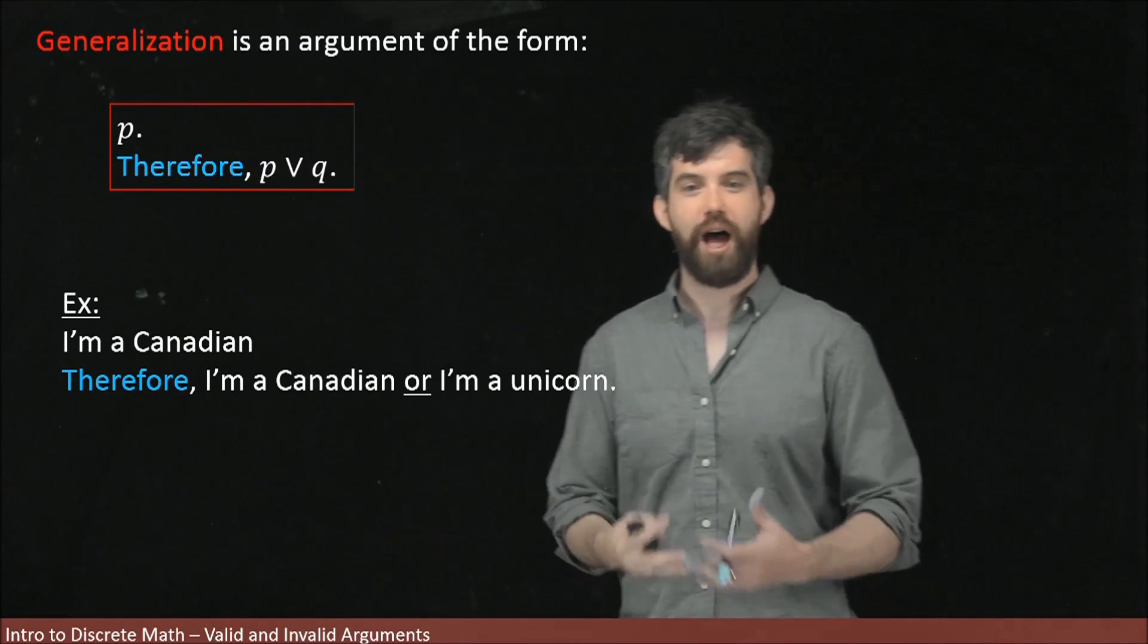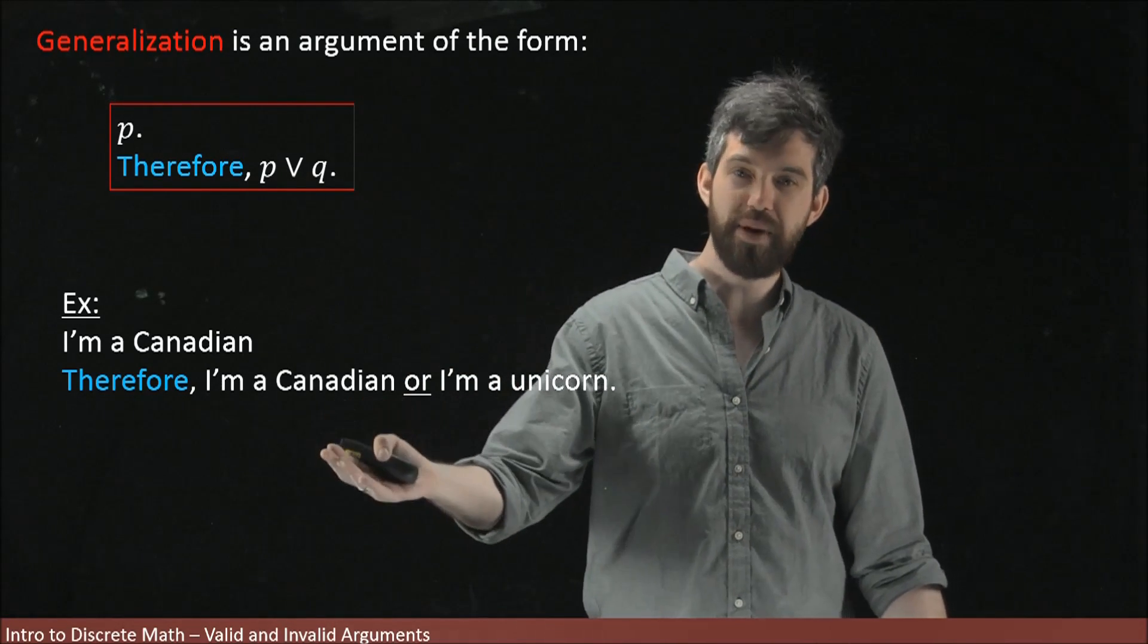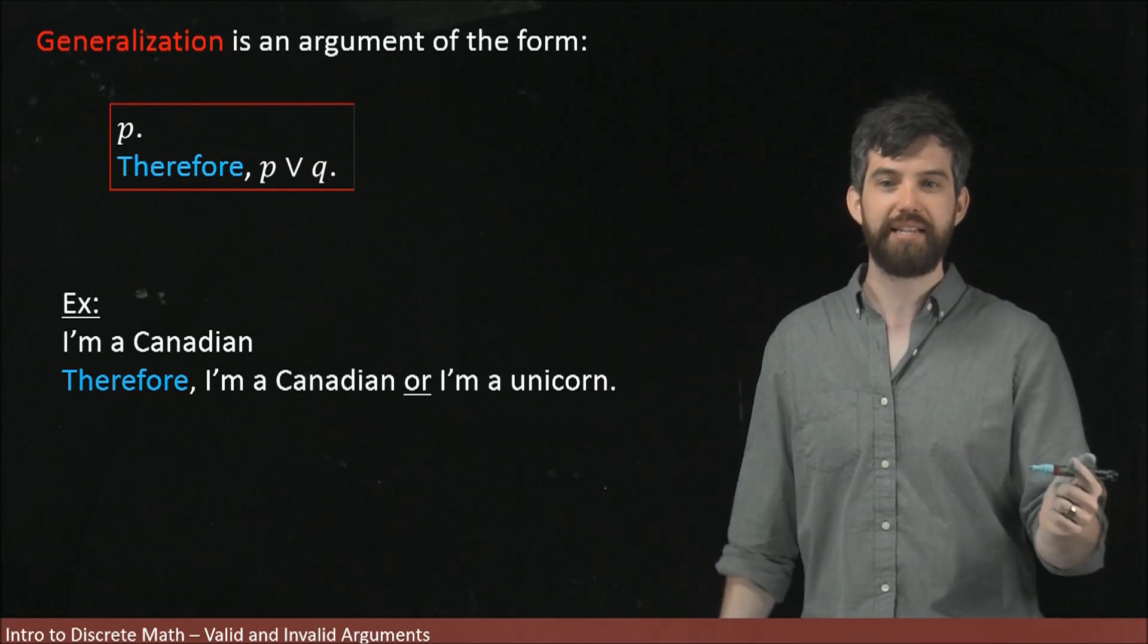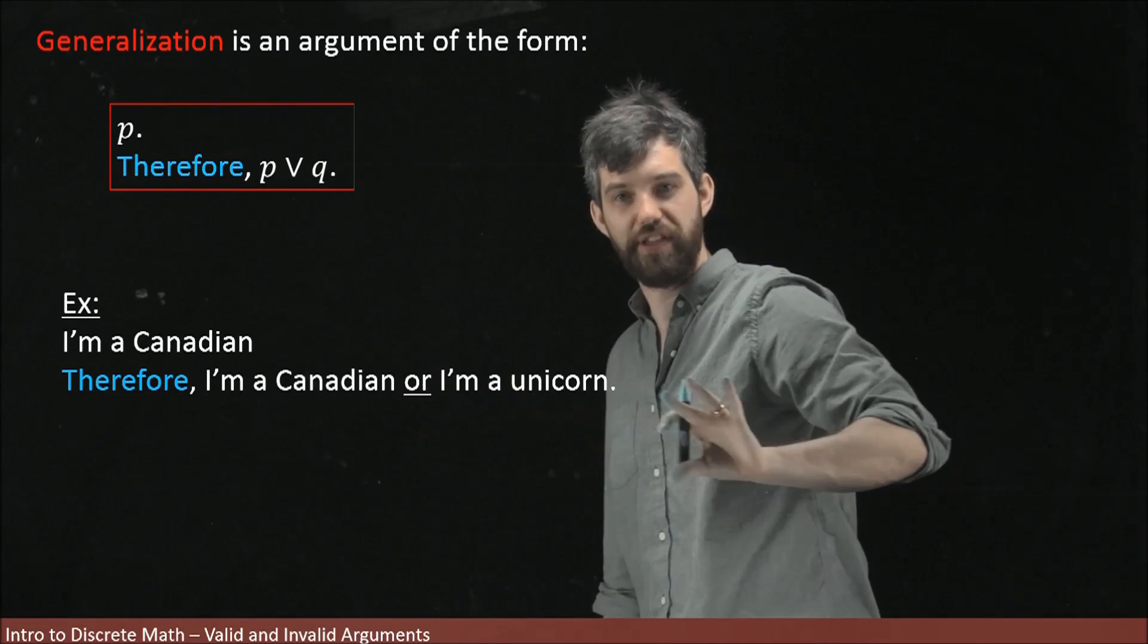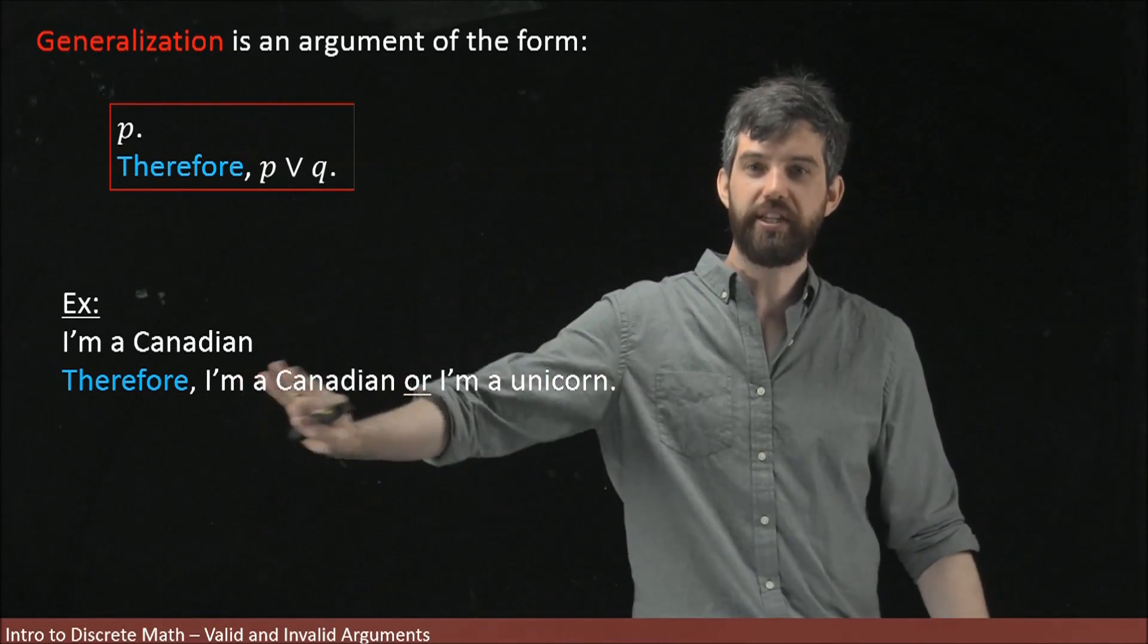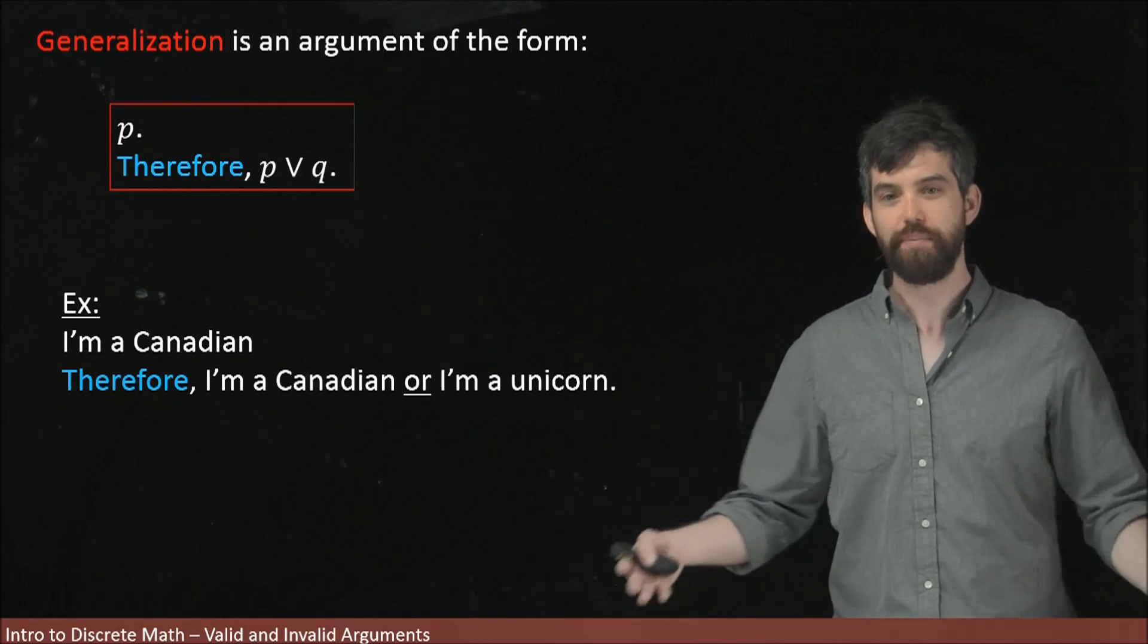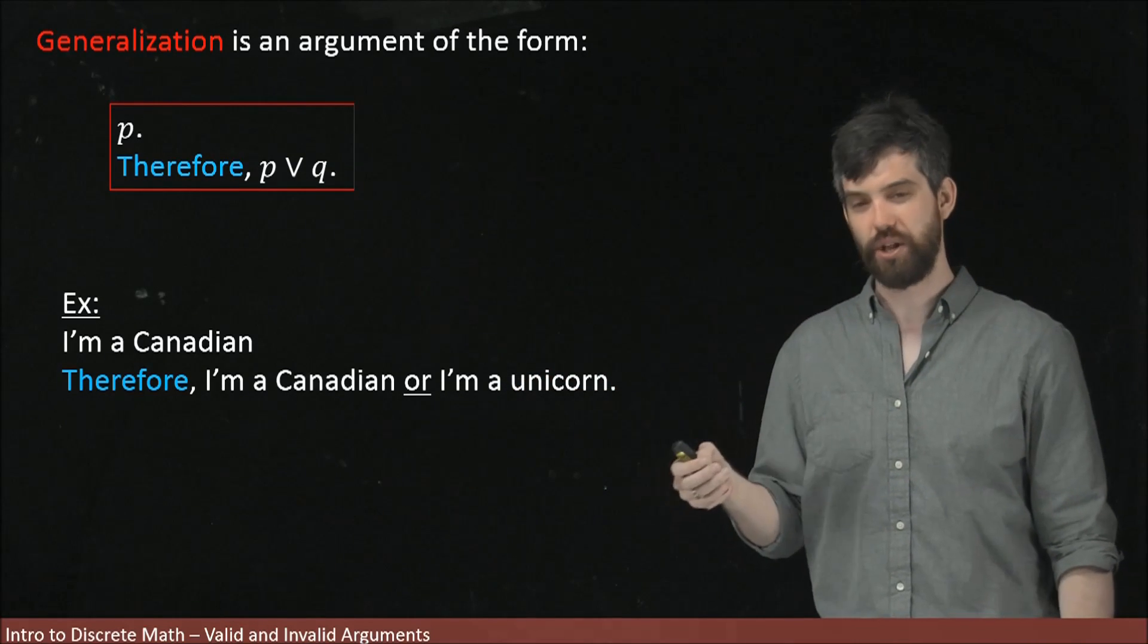For example, I'm a Canadian, that's a statement P. And I can therefore conclude that I am a Canadian or I am a unicorn. One of those two things must be true. Indeed, because I am a Canadian, the 'I am a Canadian' portion of the 'I am Canadian or I am a unicorn' part is true. And so this whole disjunction, this whole or statement is going to be true. This says nothing about whether I am or am not a unicorn. It doesn't matter. I only need one of the two things. I've got the Canadian part. That's all I need.